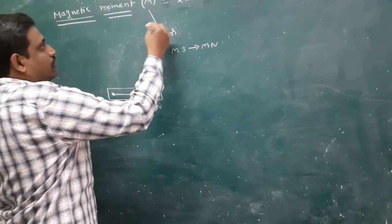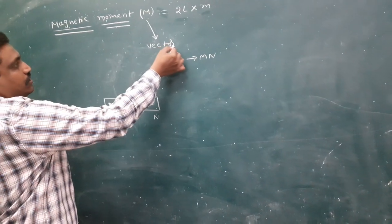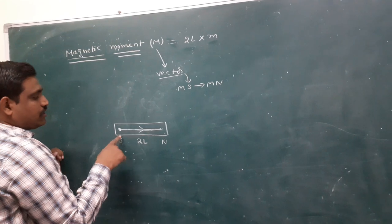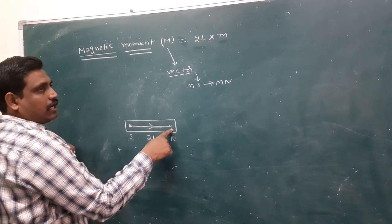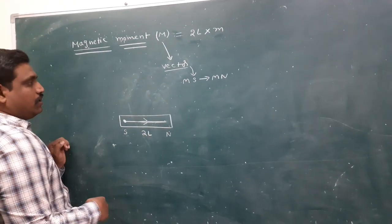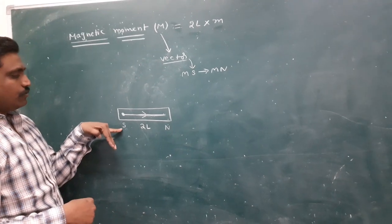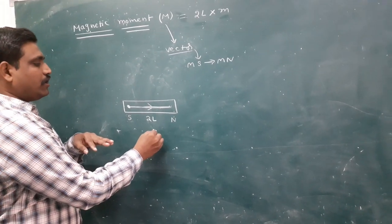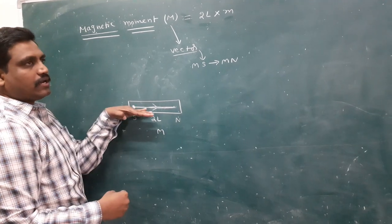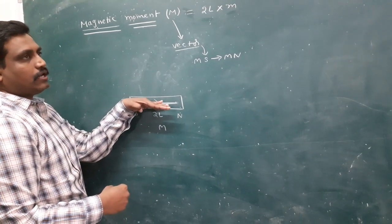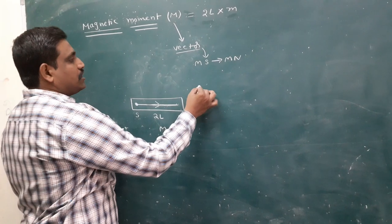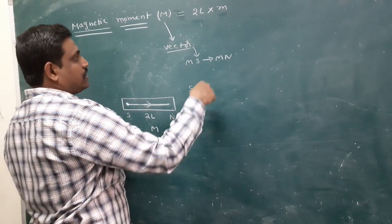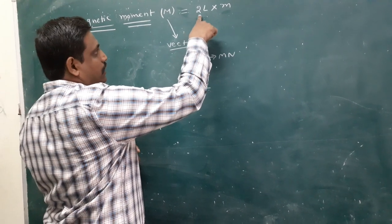Once again I repeat: magnetic moment is a vector. Its direction is always from magnetic south to magnetic north of the bar magnet. Here, this end is magnetic south, and this is magnetic north. Magnetic moment direction always goes from magnetic south to magnetic north. Now its SI units.